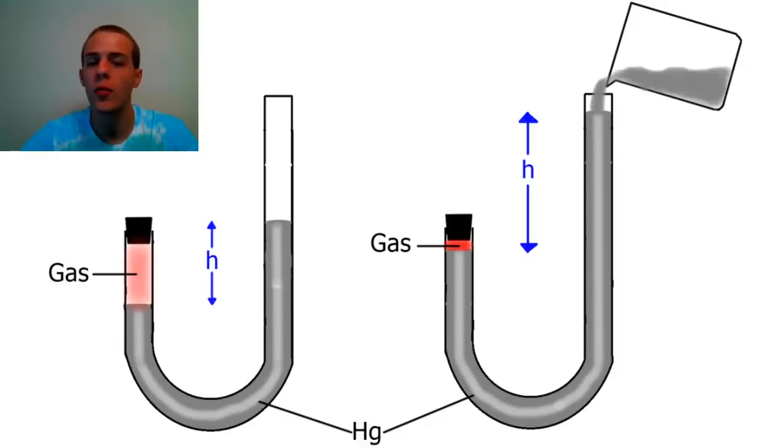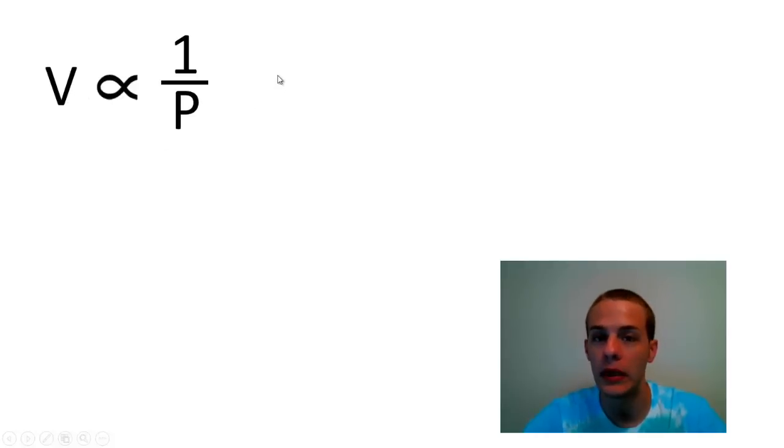And so what Robert Boyle and Robert Hooke found was that it's an inverse relationship between pressure and volume, meaning that V, the volume, is inversely proportional to the pressure. So that means that the volume is directly proportional to the reciprocal of the pressure. V is proportional to 1 over P.